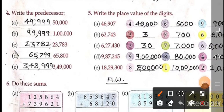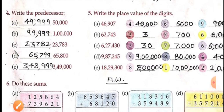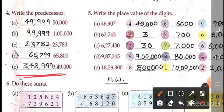Now question number 4: write the predecessor. Part A: 50,000 — its predecessor is 49,999. So like this we have to do — these are all the questions.